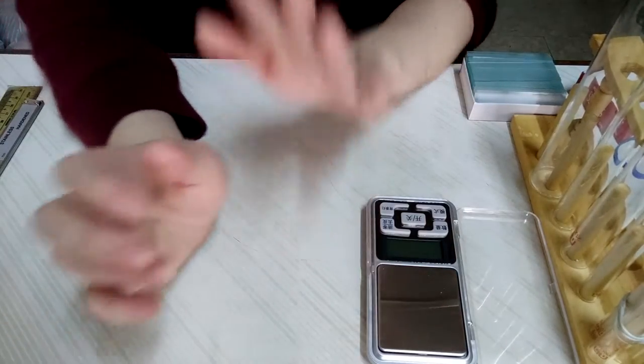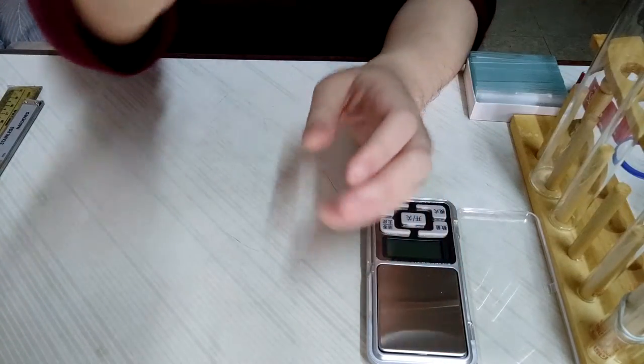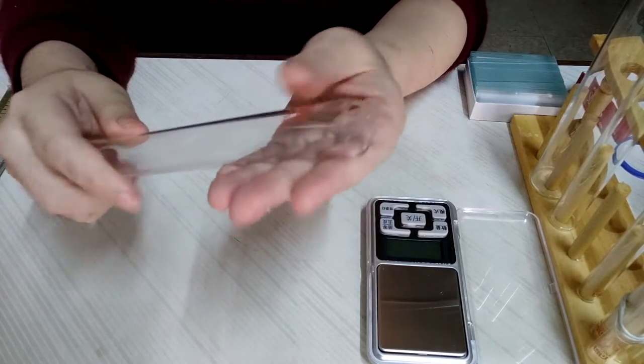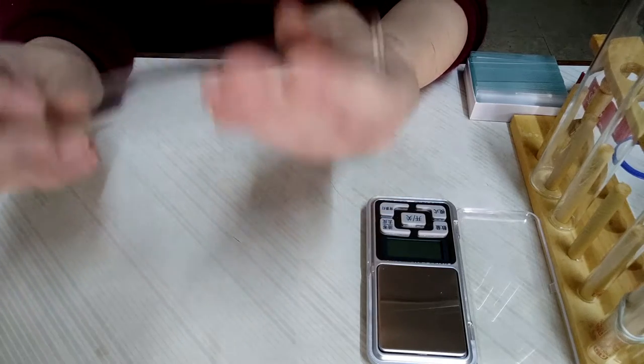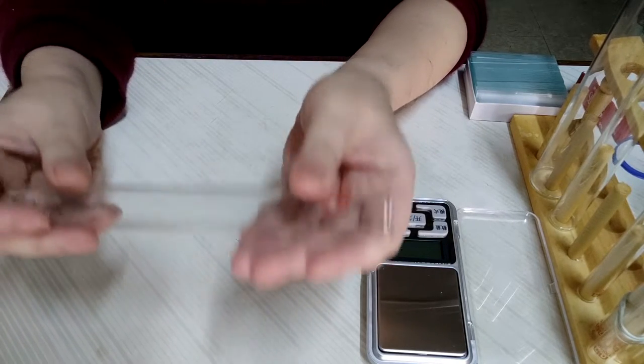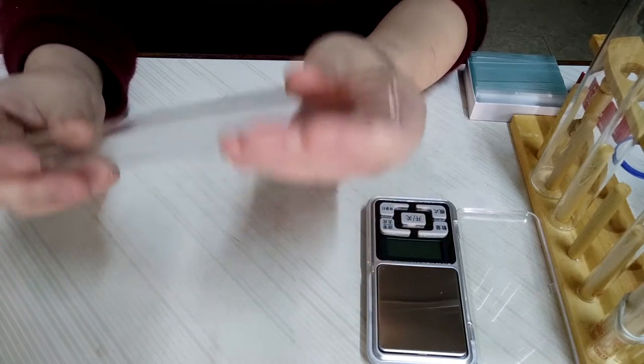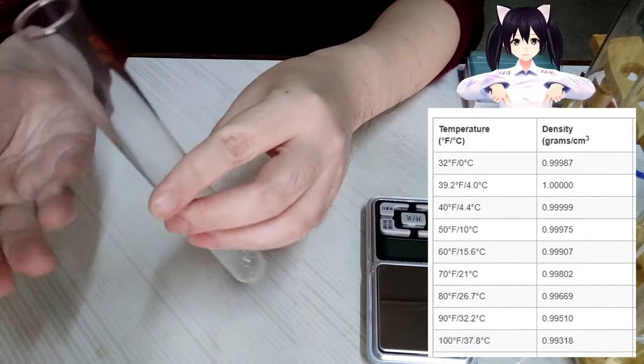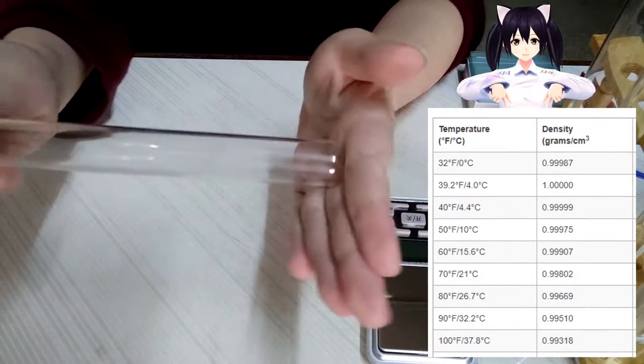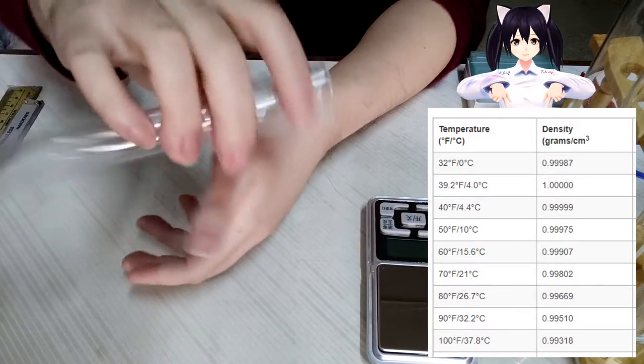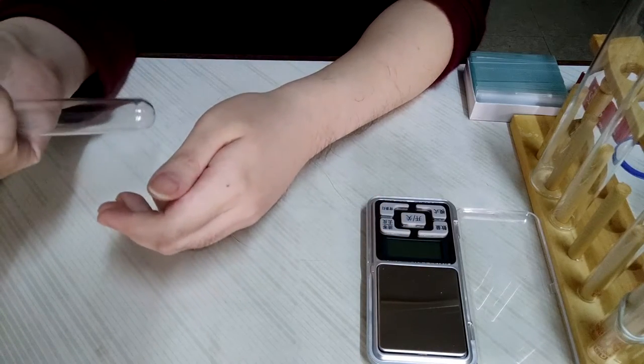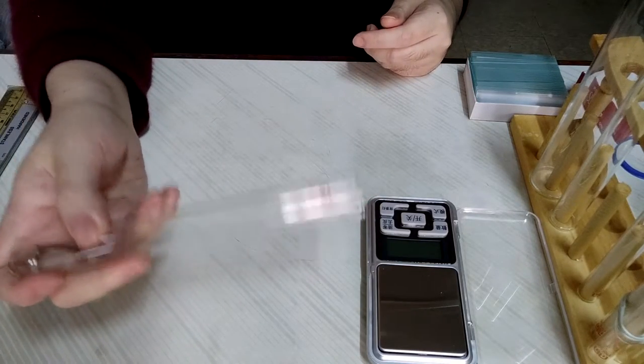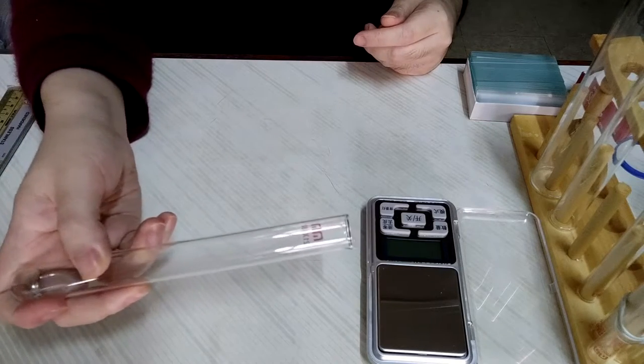I am going to estimate the capacity of the test tube without using any measuring cylinder. This water is very close to 1 gram per milliliter, so I can just fill up a vessel with water, then pour out the vessel and measure its weight. How many grams of water there means how many milliliters.